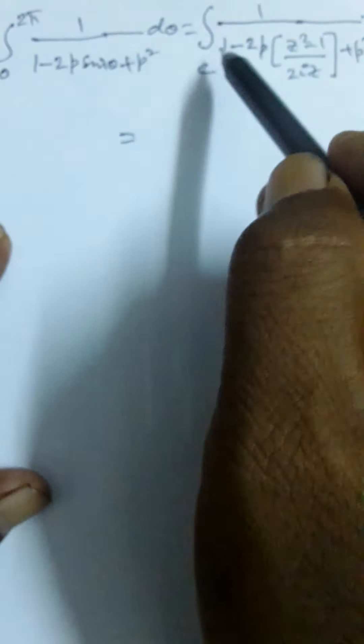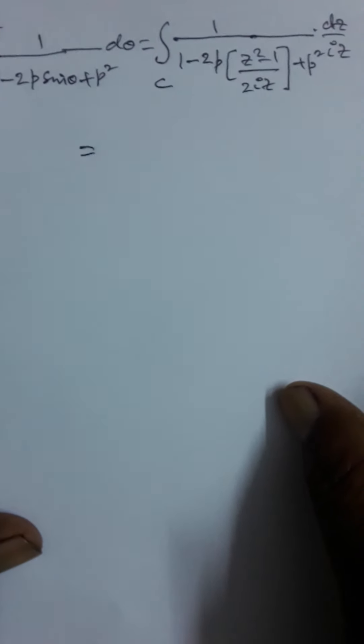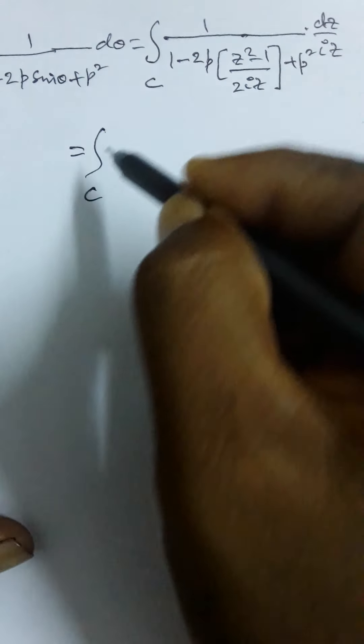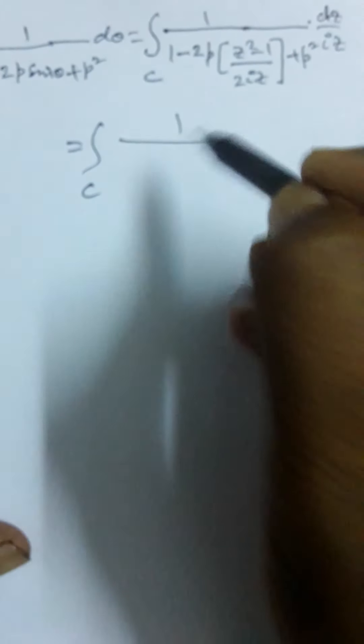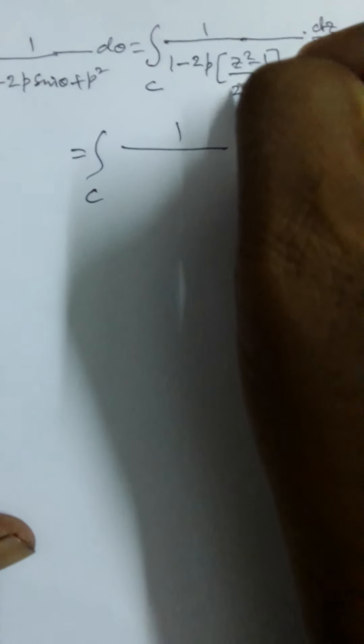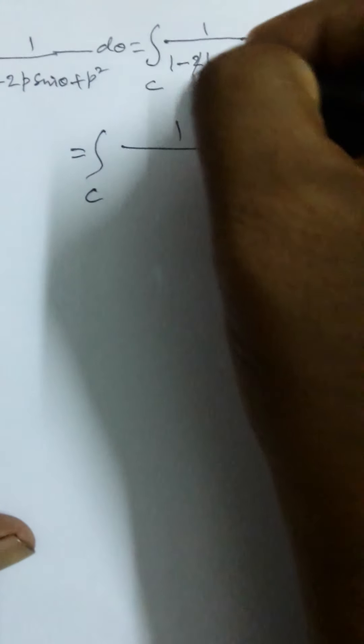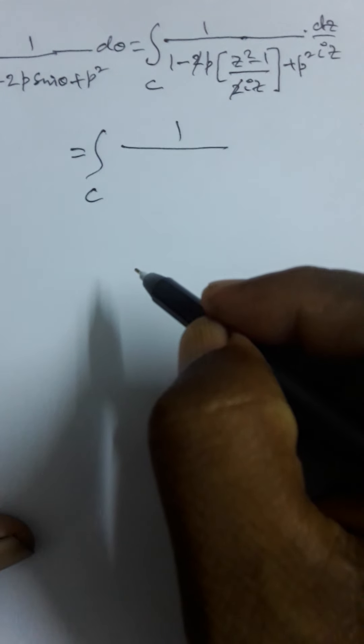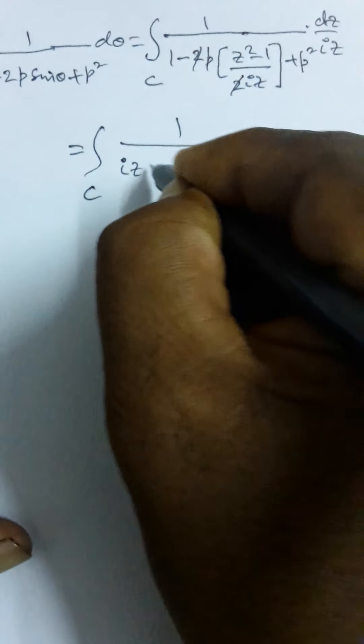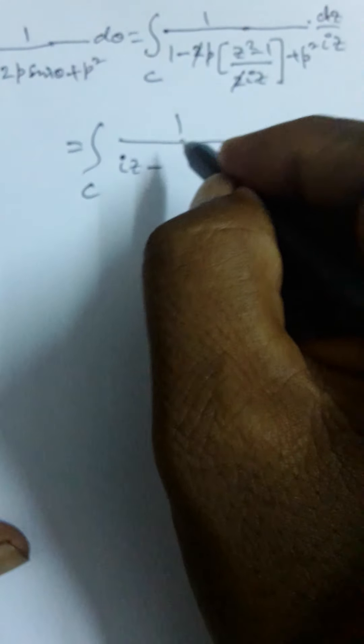Substituting these values into the integral from 0 to 2π of 1/(1 − 2p sinθ + p²) dθ, and substituting all the values, we get the integral over C. After simplification, the factor of 2 cancels.